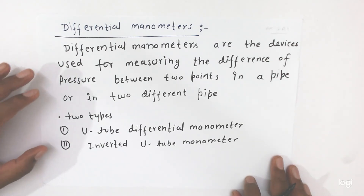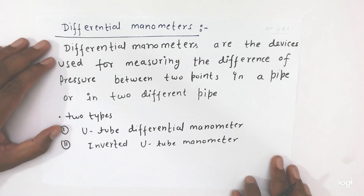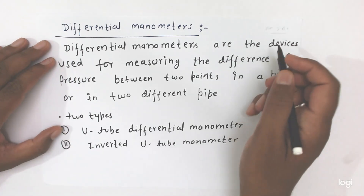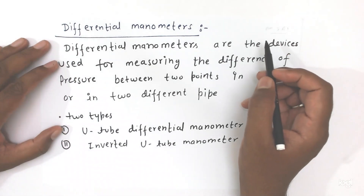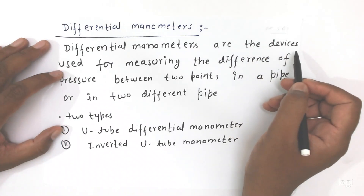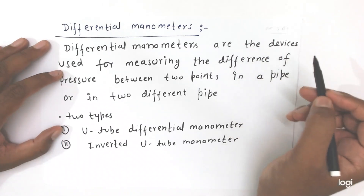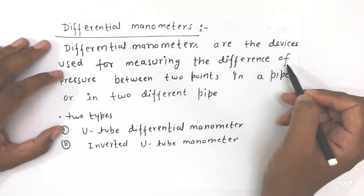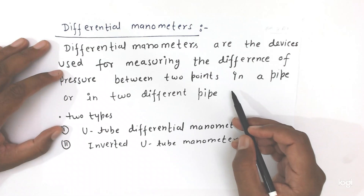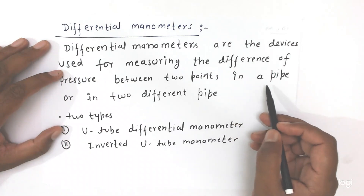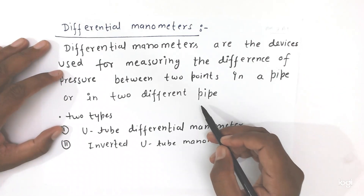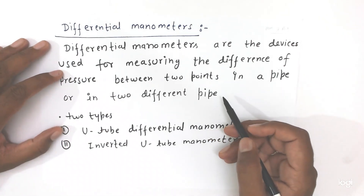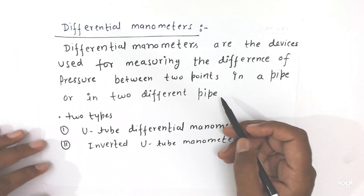Now we will discuss what is a differential manometer. Differential manometers are the devices used for measuring the difference of pressure between two points in a pipe or in two different pipes.